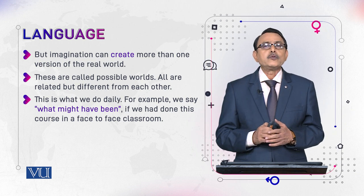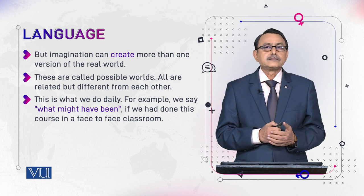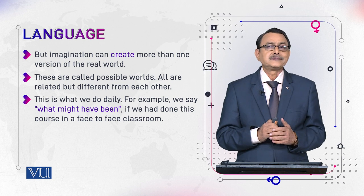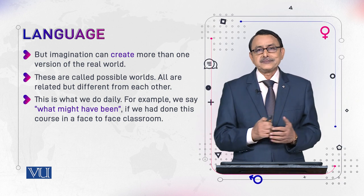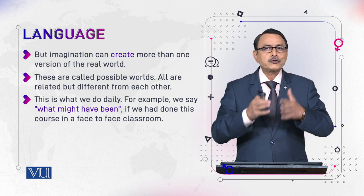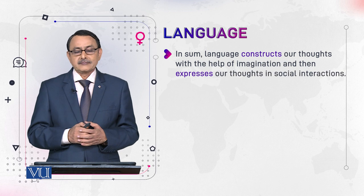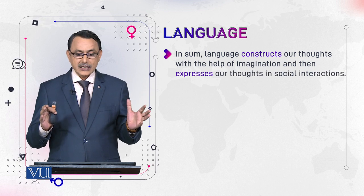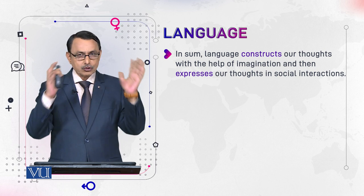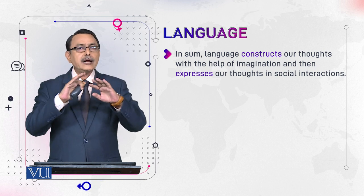For example, we say 'what might have been' — this 'what might have been' is the possible world. For example, you can say: if we had this course in a face-to-face class, what might have been? Thoughts are constructed with language, forming mental images and mental pictures with the help of imaginative power.